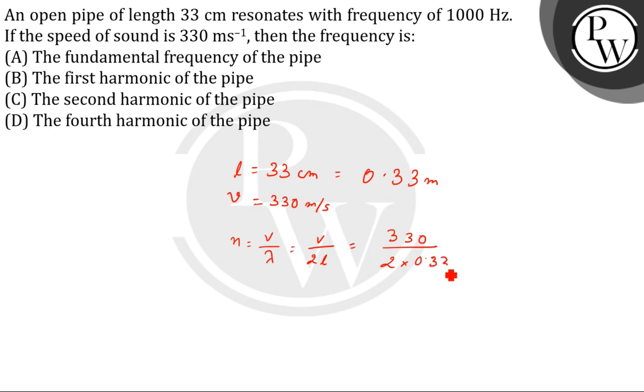The second harmonic will be n₂ = 2 × v/2L = v/L, which equals 330 divided by 0.33.